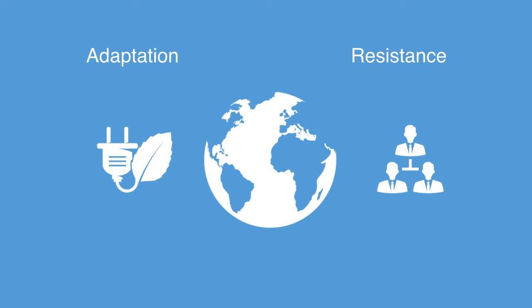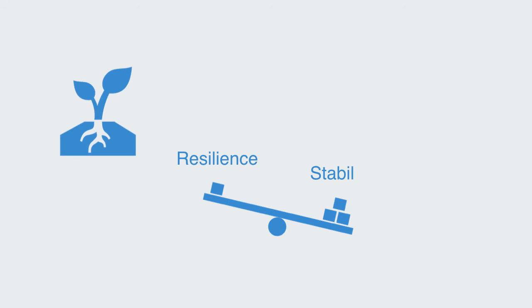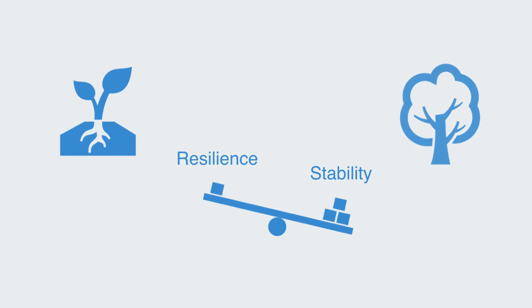The conflict between stability and resilience is important for ecosystems and social systems in many ways. There is often a trade-off between them: as we try to increase stability, we often reduce resilience, and vice versa. In order to increase resilience, we often have to reduce the supporting mechanisms that preserve stability.